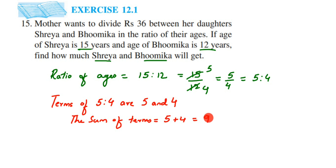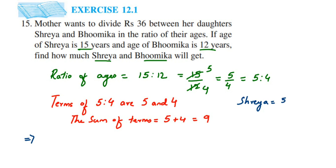Out of 9 parts, 5 parts go to Shreya and 4 parts go to Bhumika. So the fraction for Shreya is 5 out of 9, and the fraction for Bhumika is 4 out of 9. Now we know the fractions, so we can find out how many rupees each will get. Shreya will get 5/9 of the total money, and Bhumika will get 4/9 of the total money.